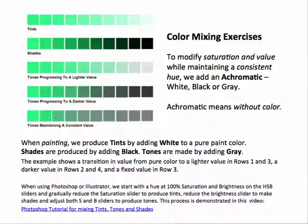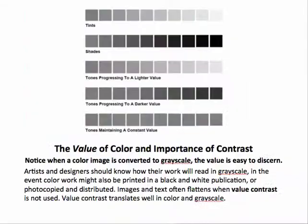Here's what that looks like in grayscale. Notice I've taken the color out and it looks like a consistent value. The tints progress to light, shades progress to dark, tones progress to a lighter value or a darker value — not as dark as the shades go — and the gray-mixed row maintains a consistent even value of gray.